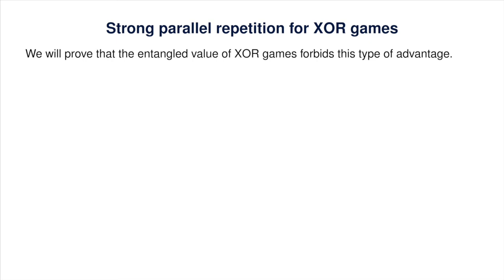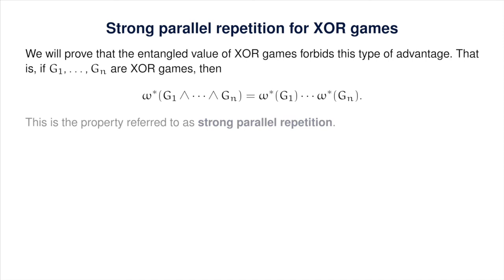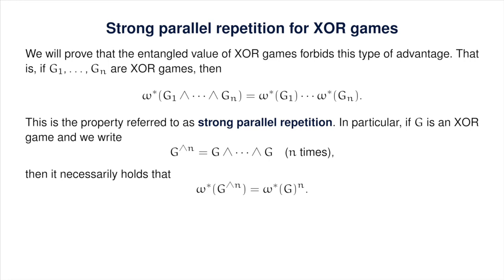However, this phenomenon cannot happen for the entangled value of XOR games. For any XOR games G₁ through Gₙ, the entangled value of their AND always equals the product of the individual entangled values—there is never any advantage for Alice and Bob to correlate strategies. This property is called strong parallel repetition or perfect parallel repetition, and it is unique to the entangled value of XOR games; the analogous statement is false for the classical value.